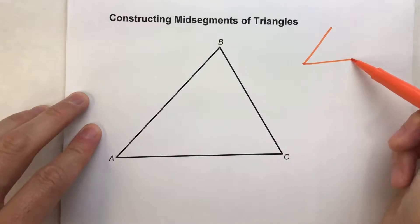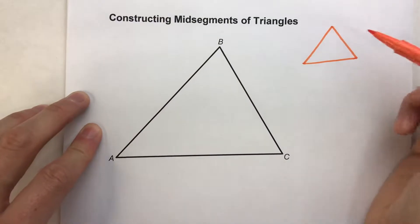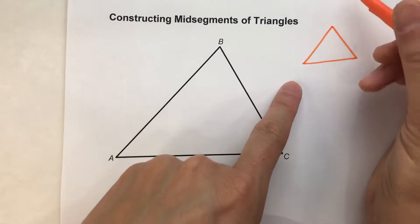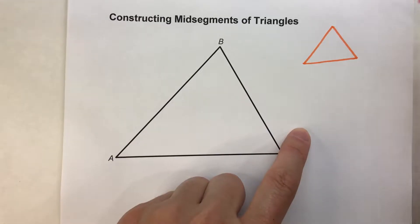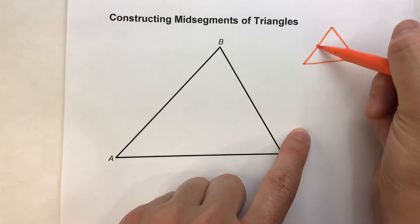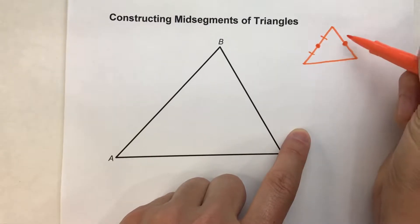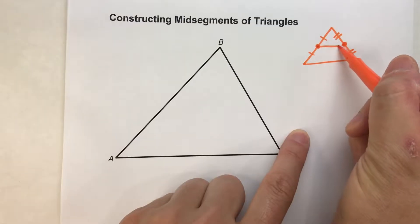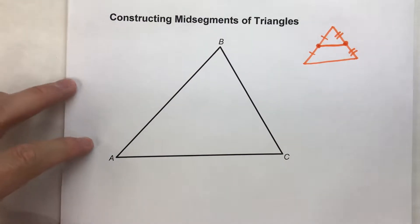Here's a little triangle. The mid-segment is a segment that connects the mid-points of two sides of a triangle. For example, if this is the mid-point of this side, and this is the mid-point of this side, we connect those two mid-points right there — and that's a mid-segment. And so, that's what we're going to construct here.